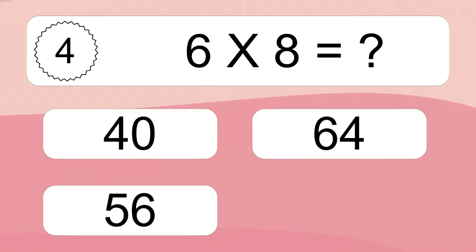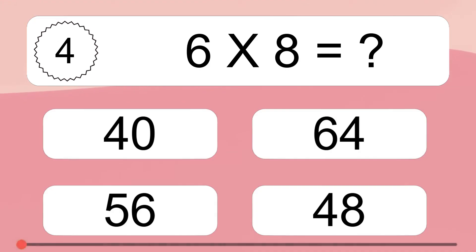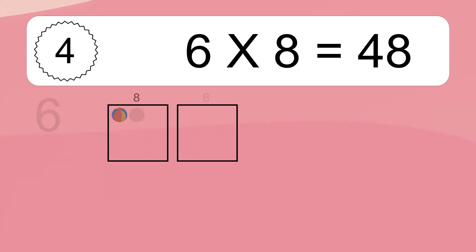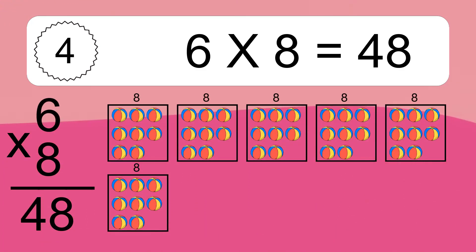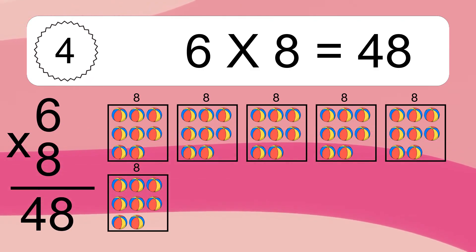6 times 8 equals what? We have 6 boxes, and each box has 8 colorful balls inside. If you count all the balls in all the boxes together, you will have 6 times 8 balls. This equals 48 balls.